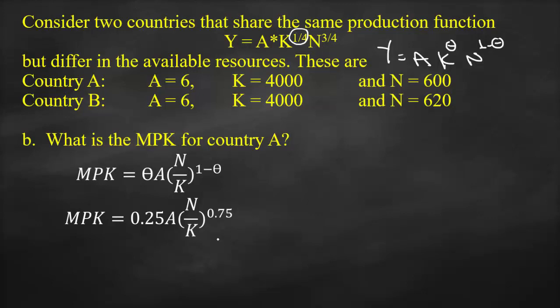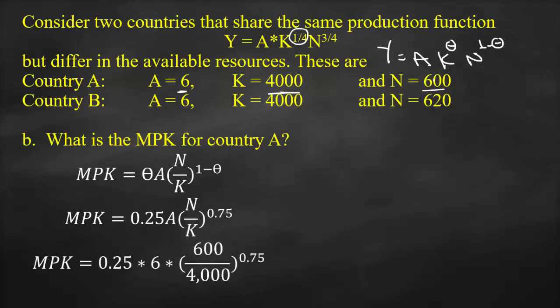For Country A, we substitute A = 6, K = 4,000, and N = 600 into the MPK formula: MPK = 0.25 × 6 × (600/4000)^0.75. This gives us an MPK of 0.3615.